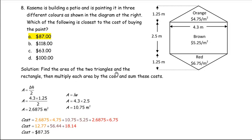In the solution, you find the area of the two triangles and the rectangle, then multiply each by the cost and sum those costs together.